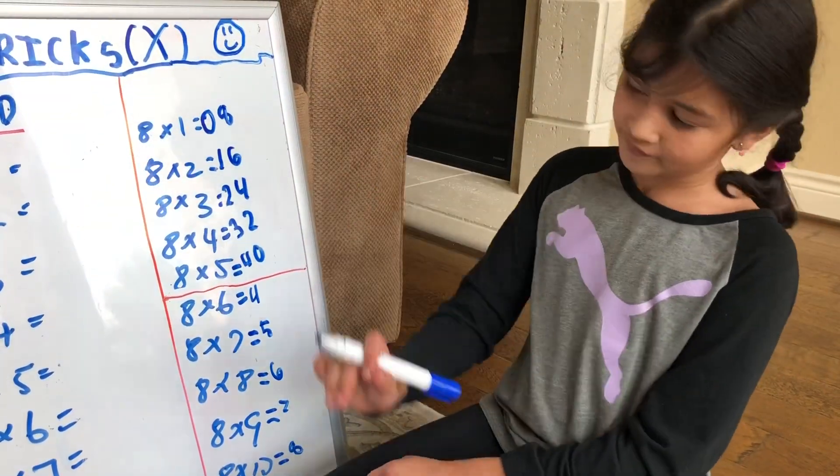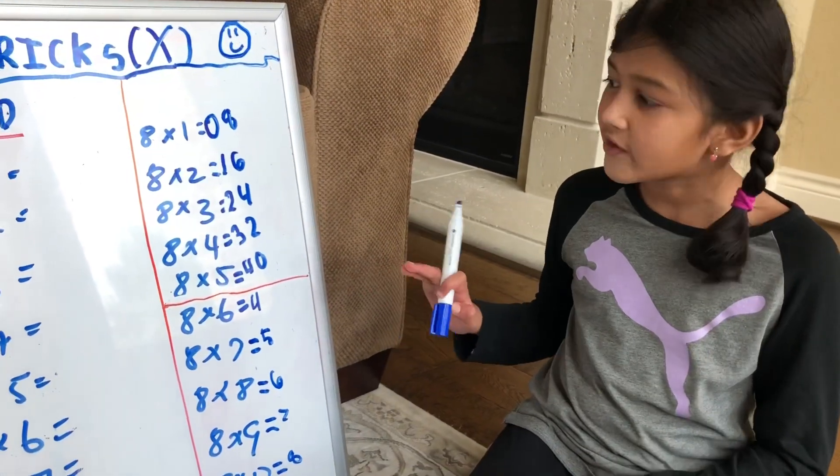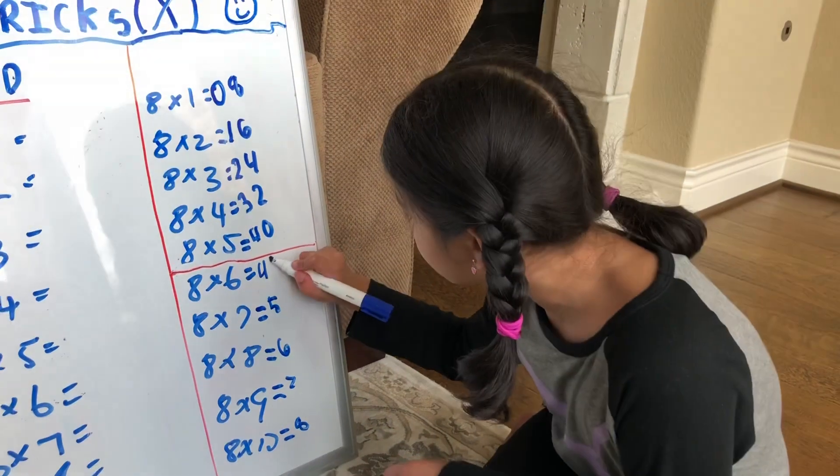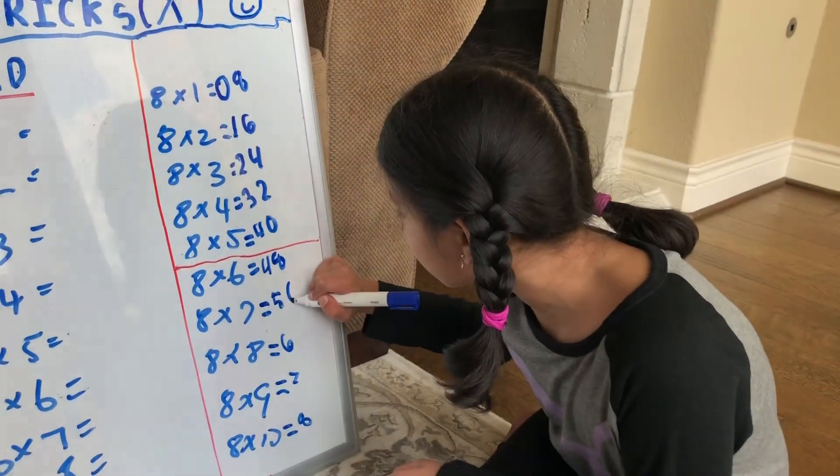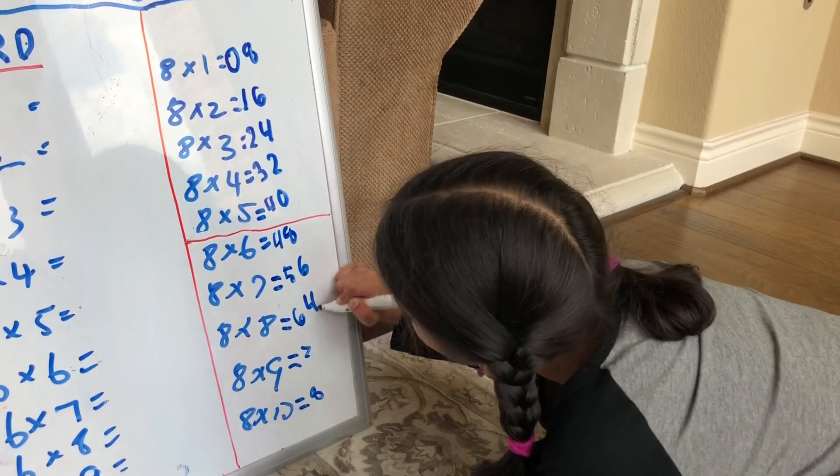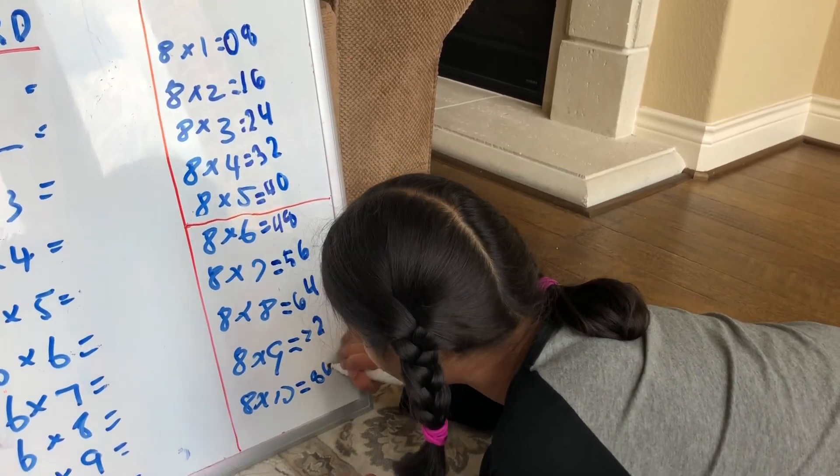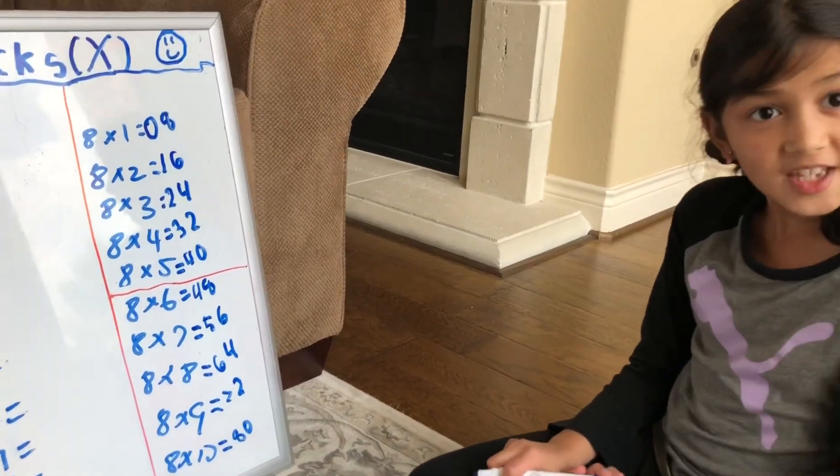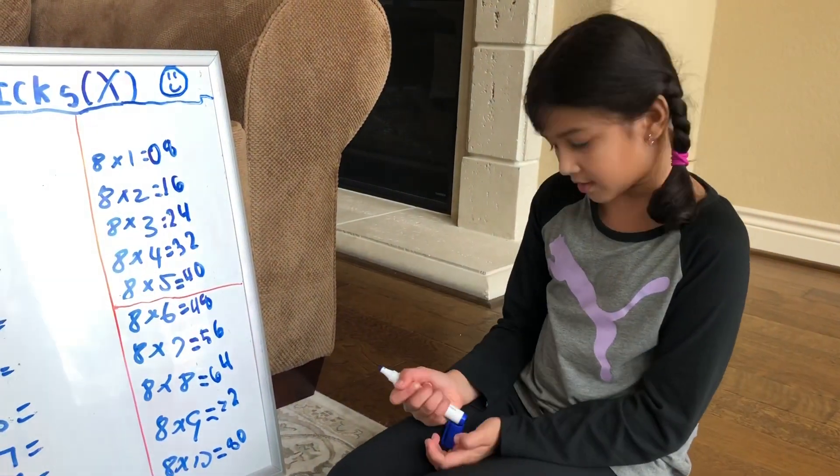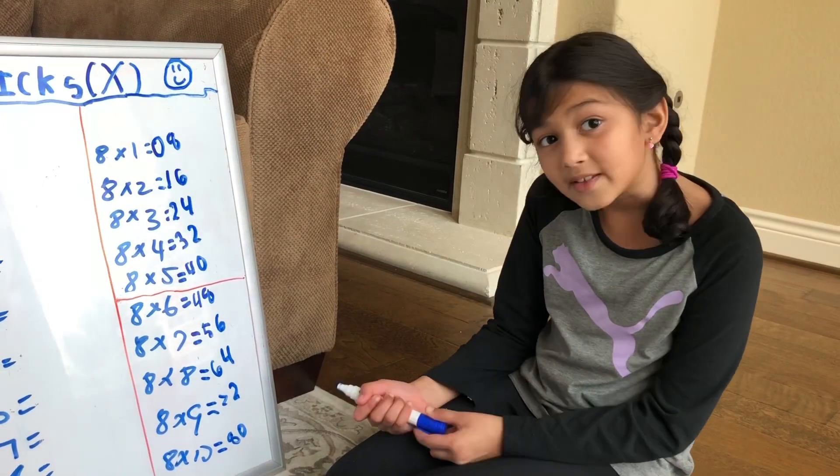When you're done with this half, the other half is really easy. You just have to do the same pattern: 8, 6, 4, 2, 0. Then you're done with the 8s. That's how you do the 8s, and that's my easy technique.